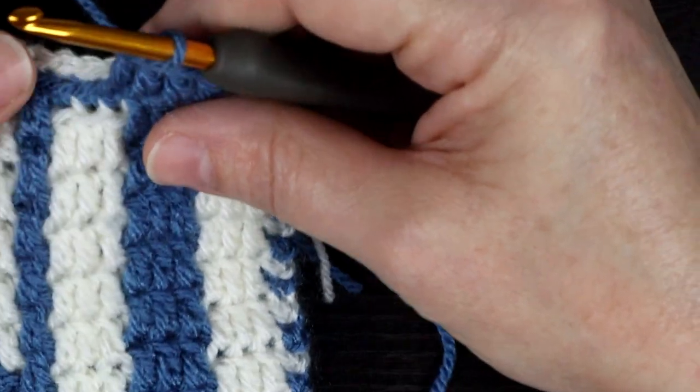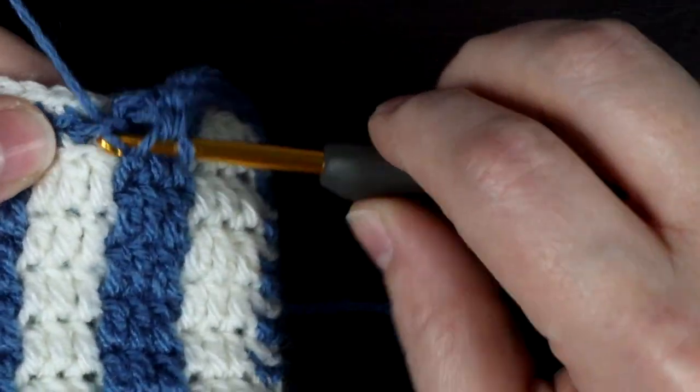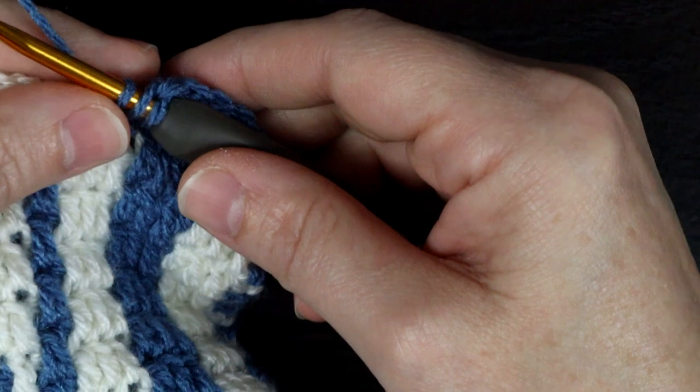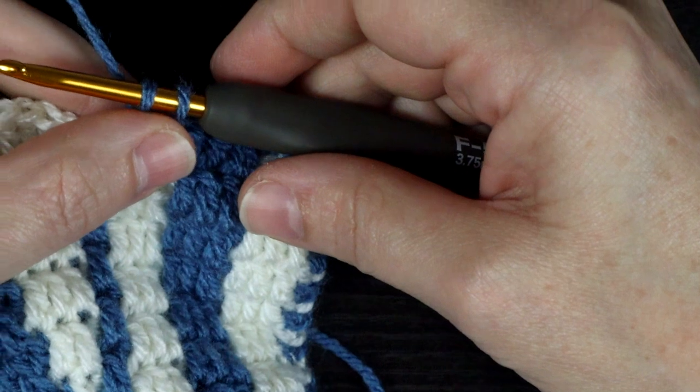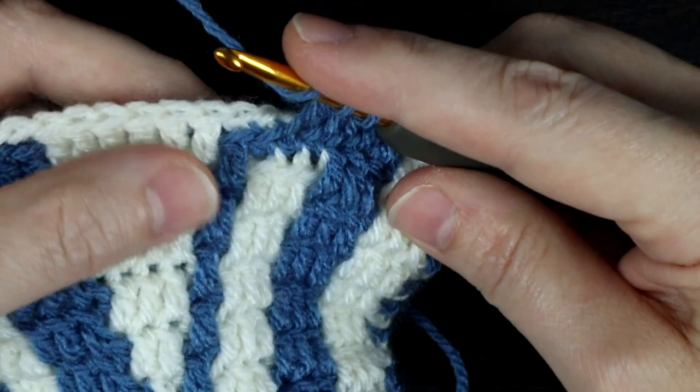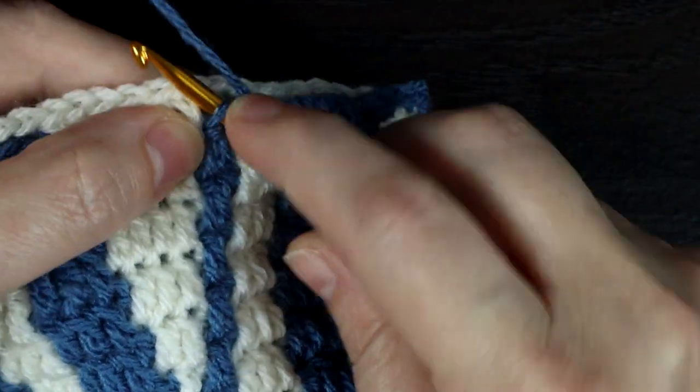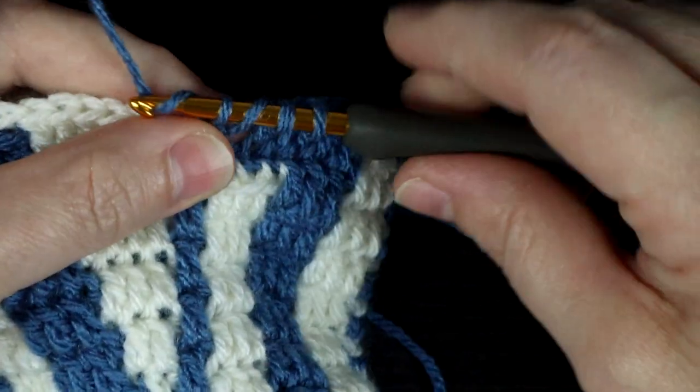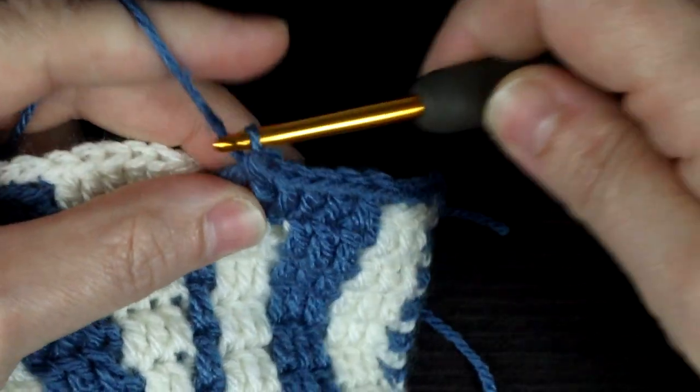Here's how to work it. I'm going to yarn over and insert my hook directly below. Yarn over and pull through. Yarn over and pull through two. Yarn over pull through all three.